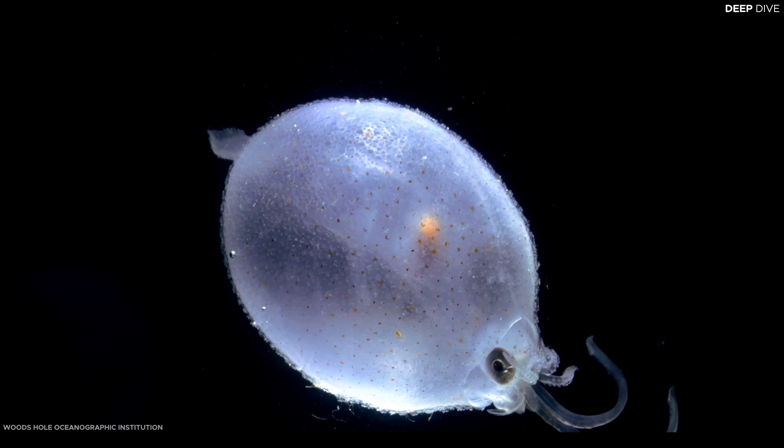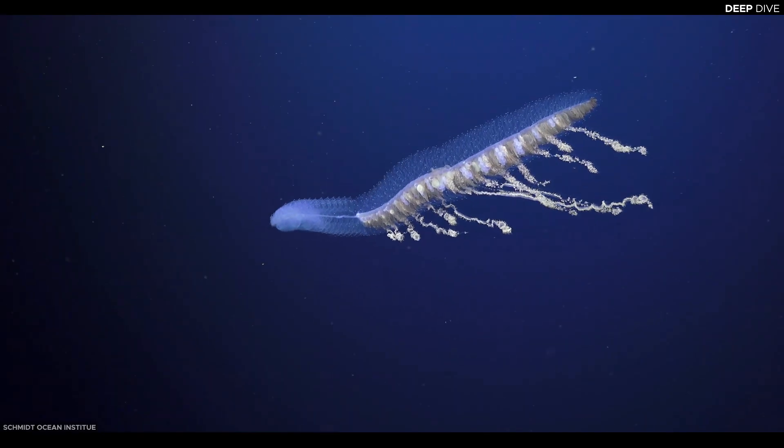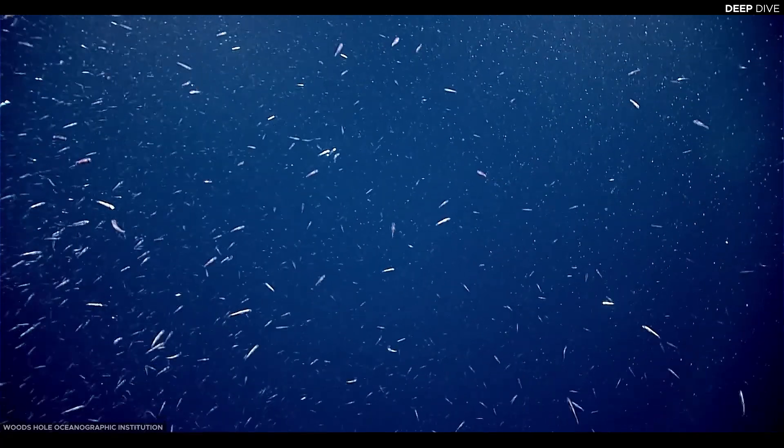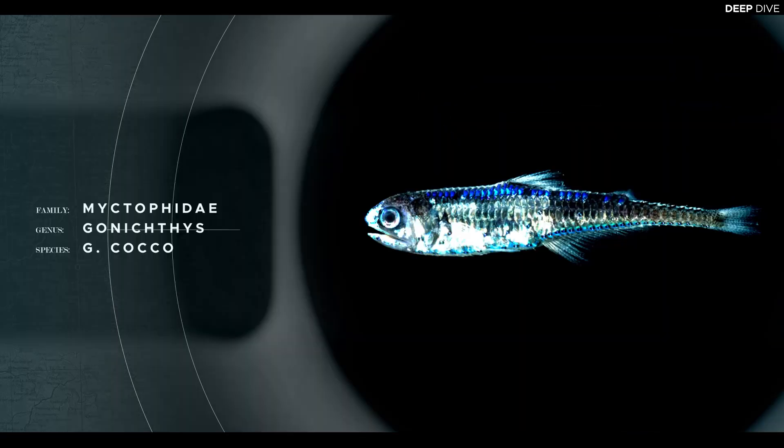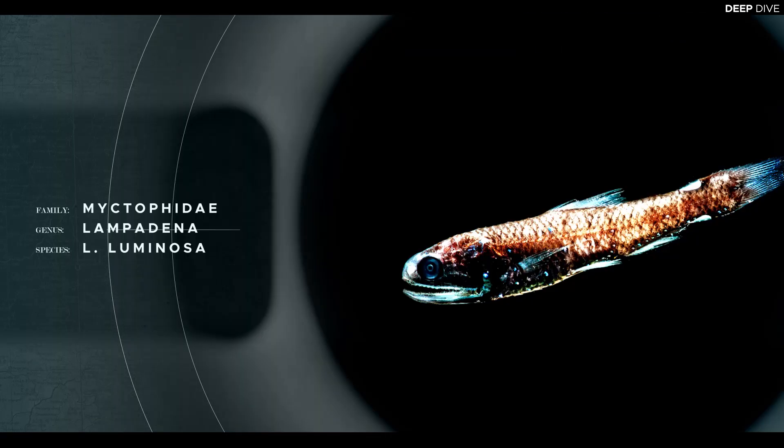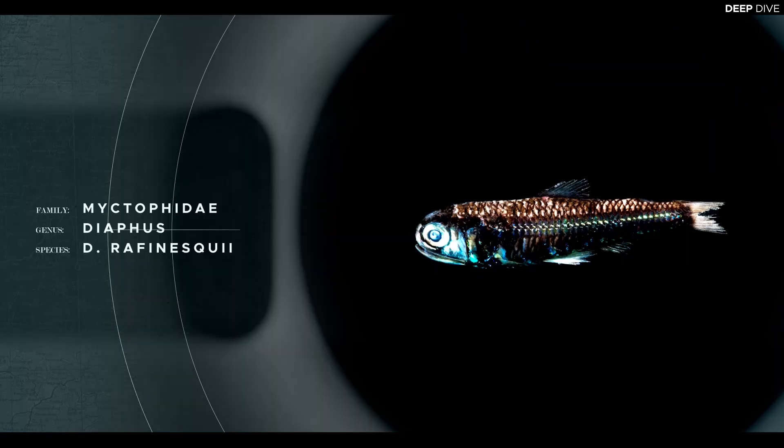Among the colorful group of animals that inhabit this zone, one group dominates. This diverse family of around 250 species of tiny fish, most of them smaller than your thumb, is the most abundant fish found at these depths, maybe even in the oceans altogether.